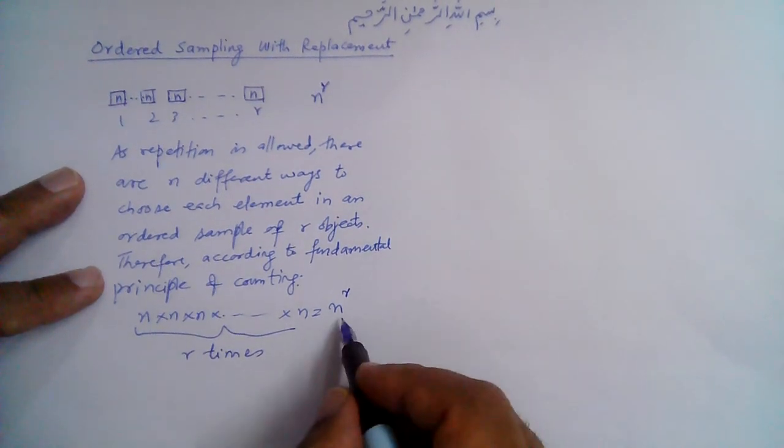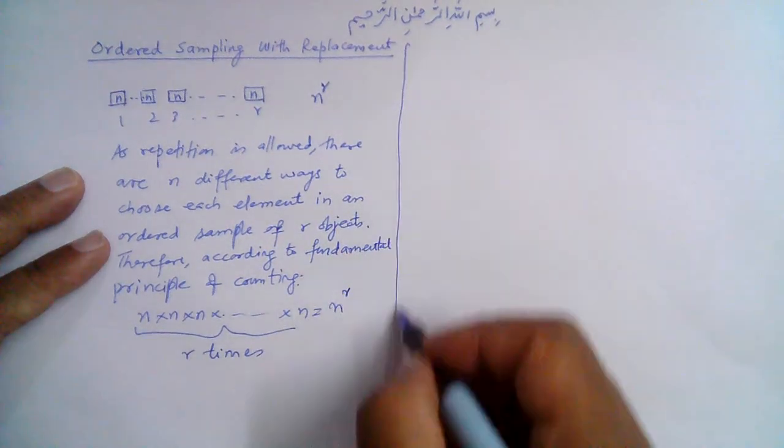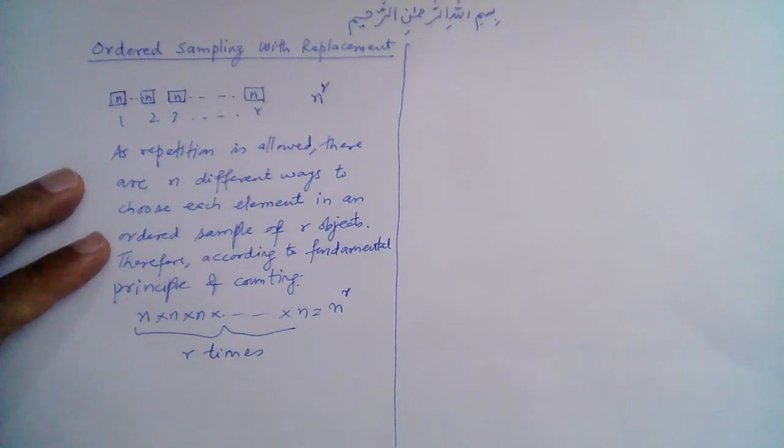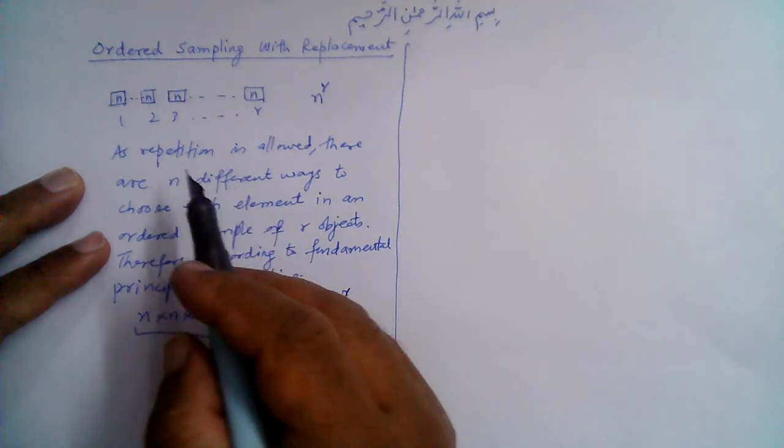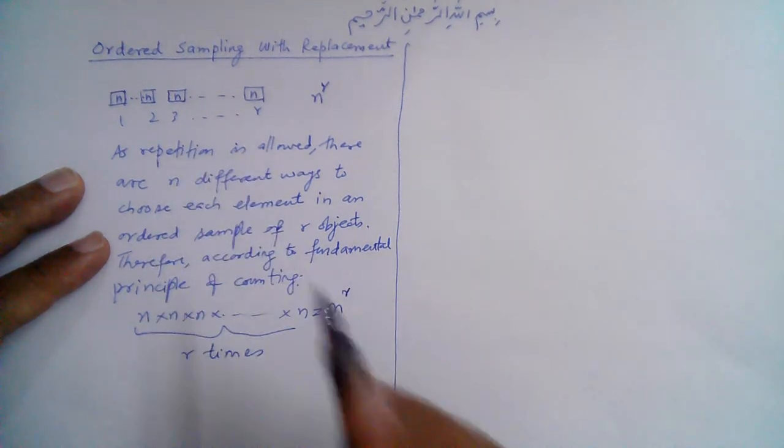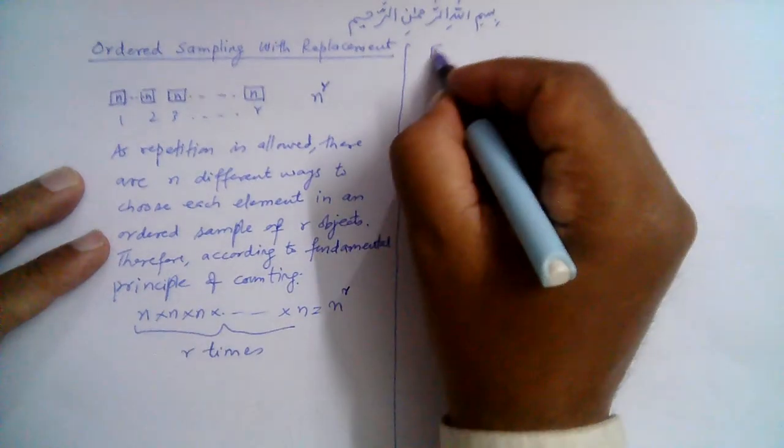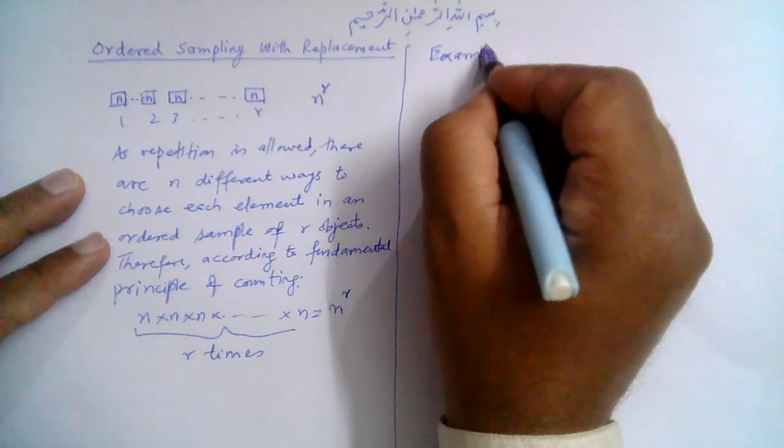So this is how r objects can be chosen from a collection of n things when we consider ordered sampling with replacement. This can be explained with the help of an example.